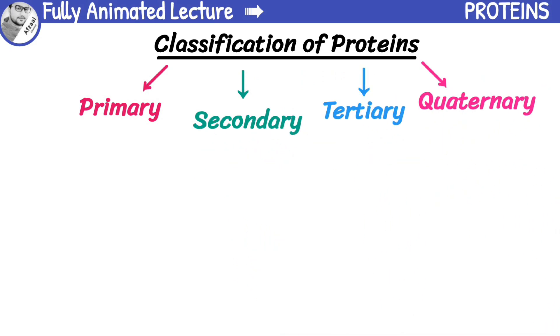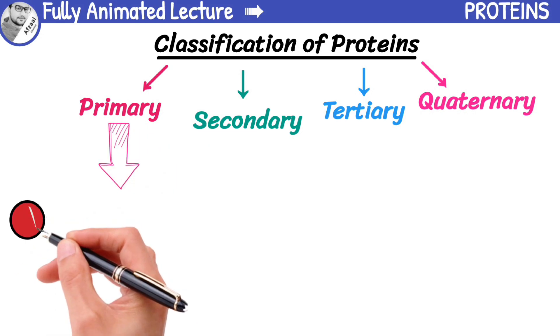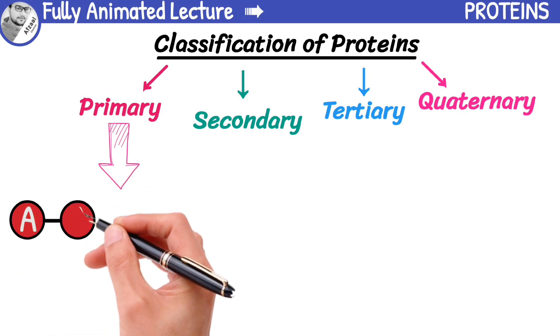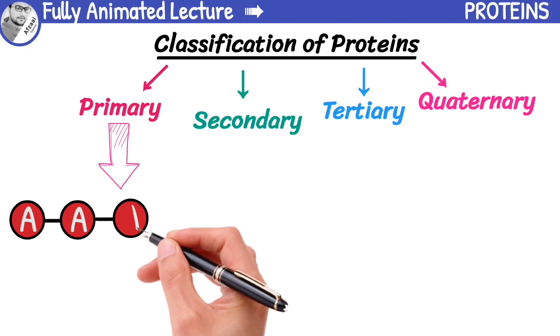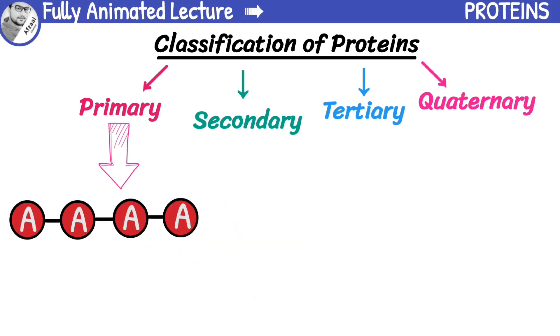Let's start with primary proteins. These are the simplest form of proteins and are made up of a linear chain of amino acids. The sequence of amino acids determines the protein's function and shape.